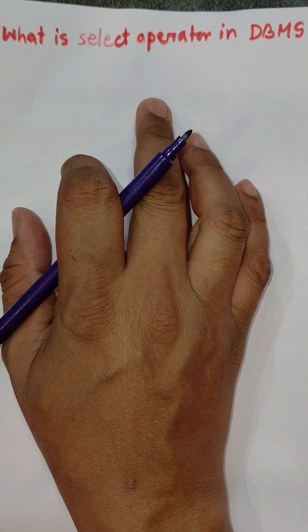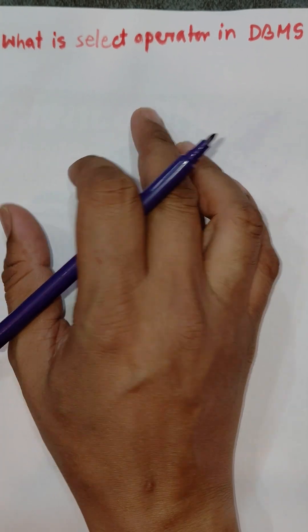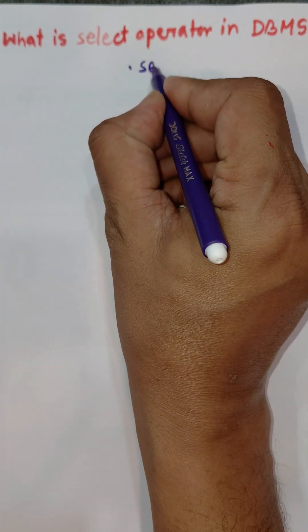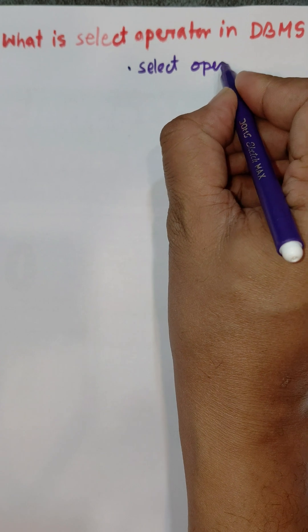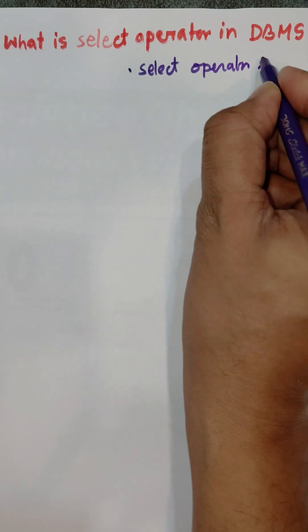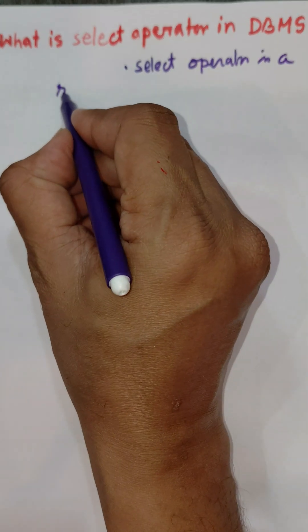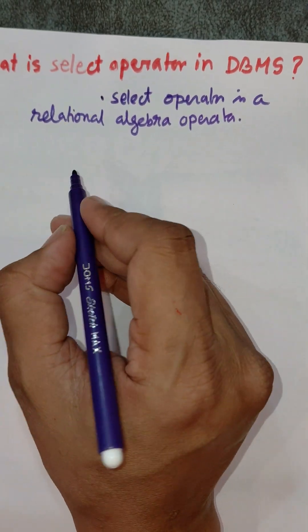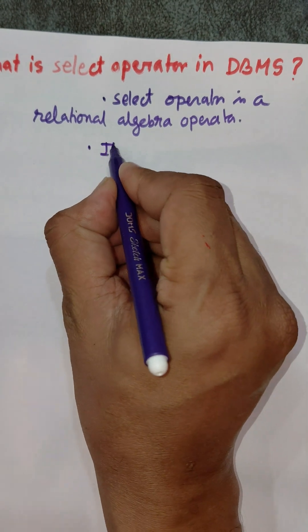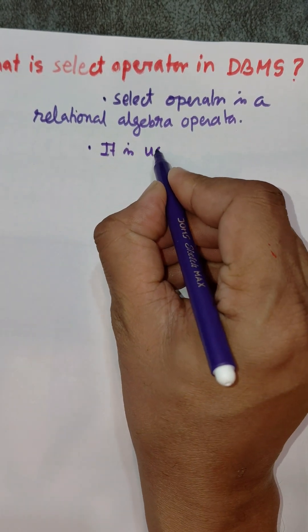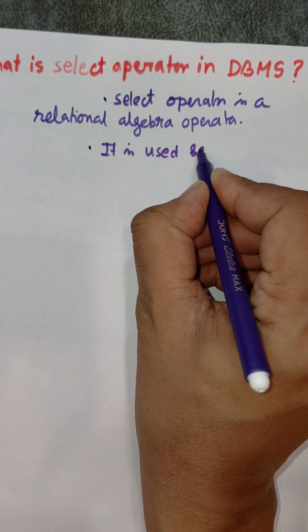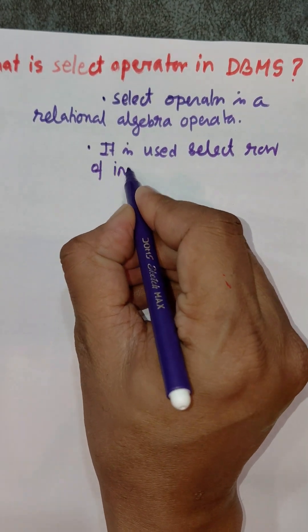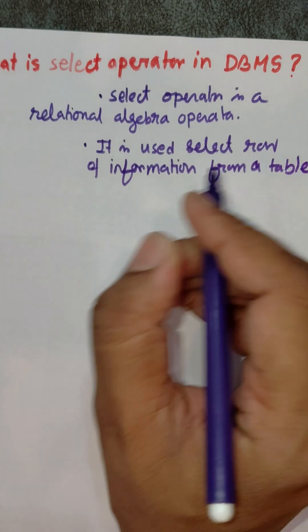Hi everybody, in this video I am going to discuss select operator in DBMS. Select operator is a relational algebra operator. It is used to select rows of information from a table.